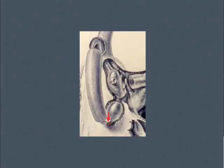Loose particles in the inner ear may fall into the semicircular canals. If they happen to fall into the horizontal and superior canals, they tend to come out within a short time during normal activities. However, when they get into the posterior semicircular canal, they tend to remain longer because the posterior canal is sealed at the bottom.